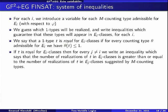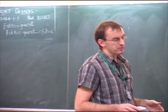Now, how do we construct the system of inequalities? We introduce variables for m-counting types admissible for E_i. The number of these m-counting types is doubly exponential in the size of formula phi. Our procedure: we guess the set of one-types which will be realized in the model and try to set some inequalities. There will be two kinds of inequalities: the first ensures elements of these guessed one-types appear in the model, and the second says something about royal types. We say a one-type T is royal for E_i classes with respect to formula phi if every admissible counting type for E_i has at most one realization of this type.